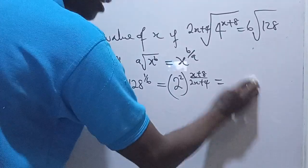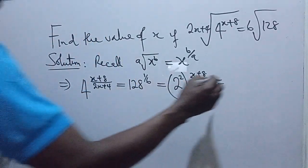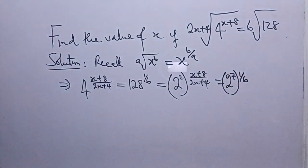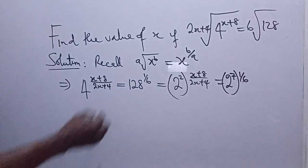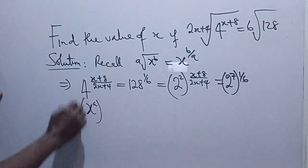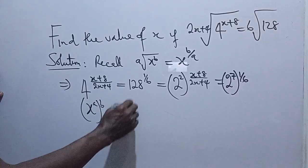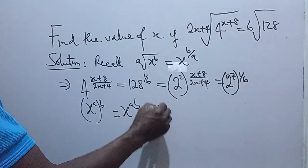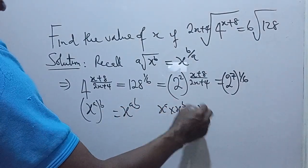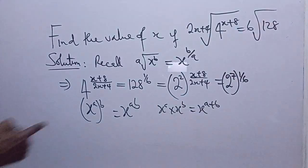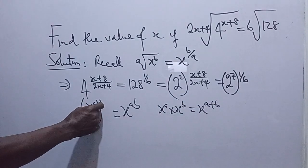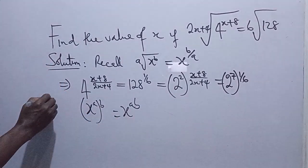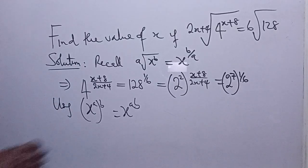We have 2 raised power 7, which gives us 128. So that means this will now be 2 raised power 7, raised power 1 over 6. So what next? We can expand this. Because according to the law of indices, if you have x raised power a, raised power b, it can be expressed as x raised power ab. We are not adding, we are multiplying the powers. If it were x raised power a times x raised power b now, this would be x raised power a plus b. But since you have this outside the brackets as an exponent, you multiply. So using this concept...